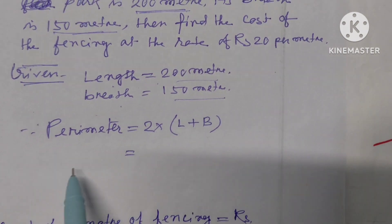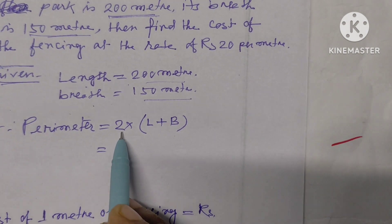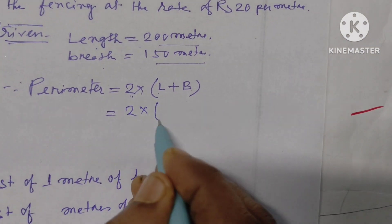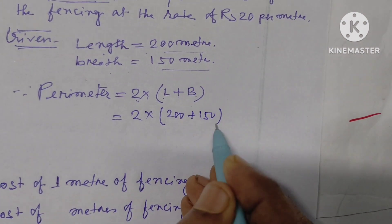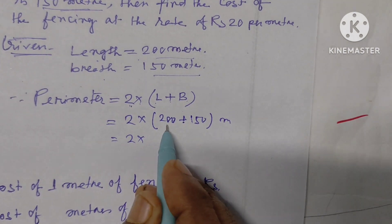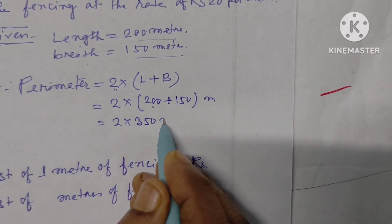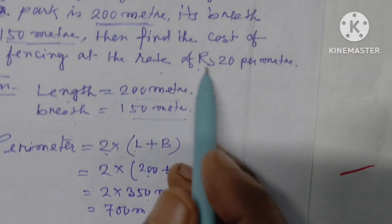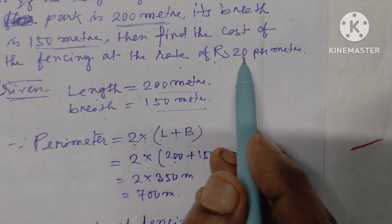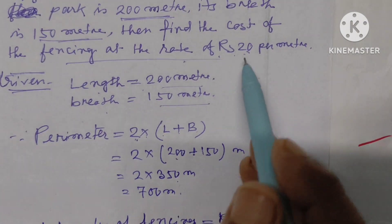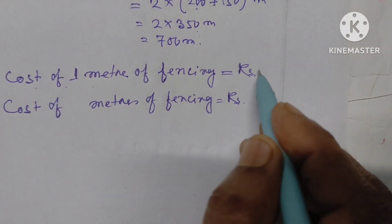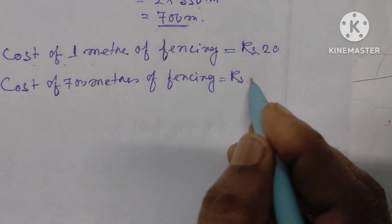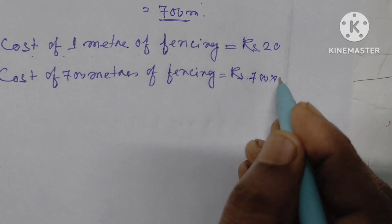Find the perimeter using the formula: Perimeter of rectangle equals 2 times (length plus breadth) equals 2 times (200 plus 150) equals 2 times 350 equals 700 meters. Cost of one meter of fencing is rupees 20. Therefore, cost of 700 meters of fencing is 700 times 20.